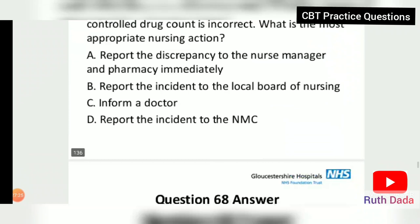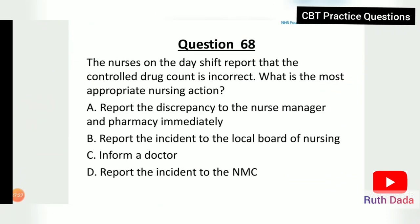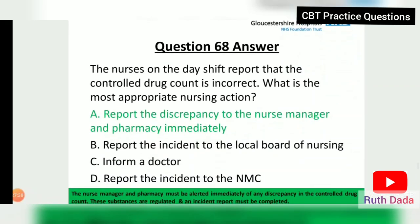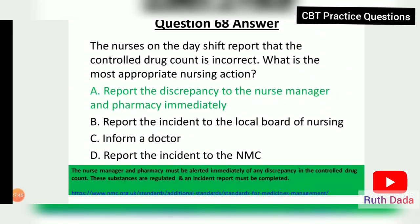Question 68: The nurses on the day shift report that the controlled drugs count is incorrect. What is the most appropriate nursing action? Report the discrepancy to the nurse manager and pharmacy immediately. The nurse manager and pharmacy must be alerted immediately of any discrepancy in controlled drug counts, as these substances are regulated and an incident report must be completed.